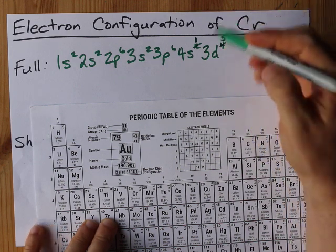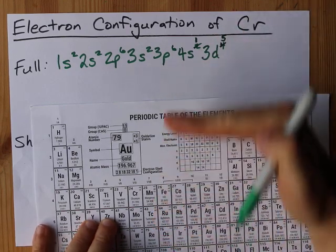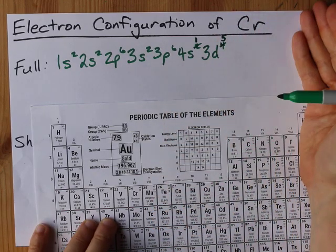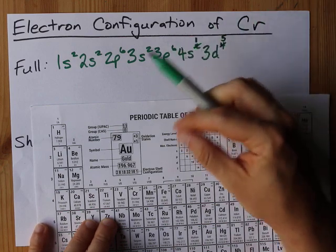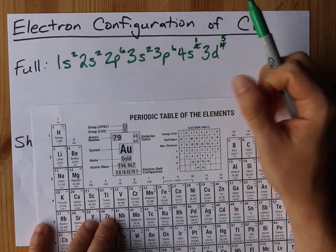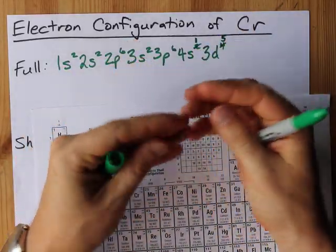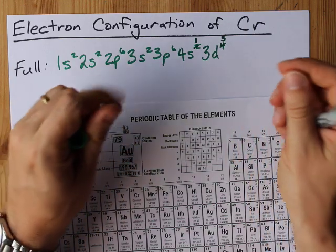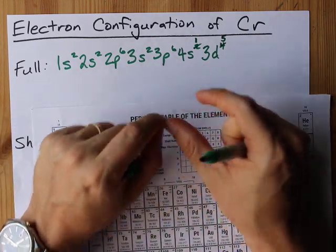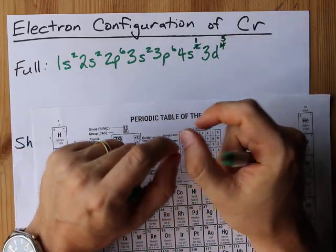This is an exception to the aufbau principle where you go from the bottom up. The reasoning is that perfectly empty or full orbitals are absolutely the best. The octet rule from like grade 9 probably taught you that. But perfectly half-filled subshells are also ideal.